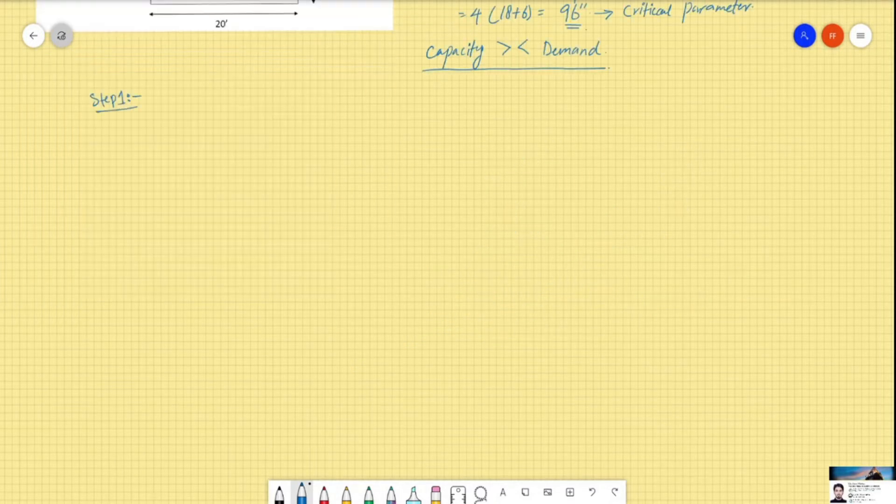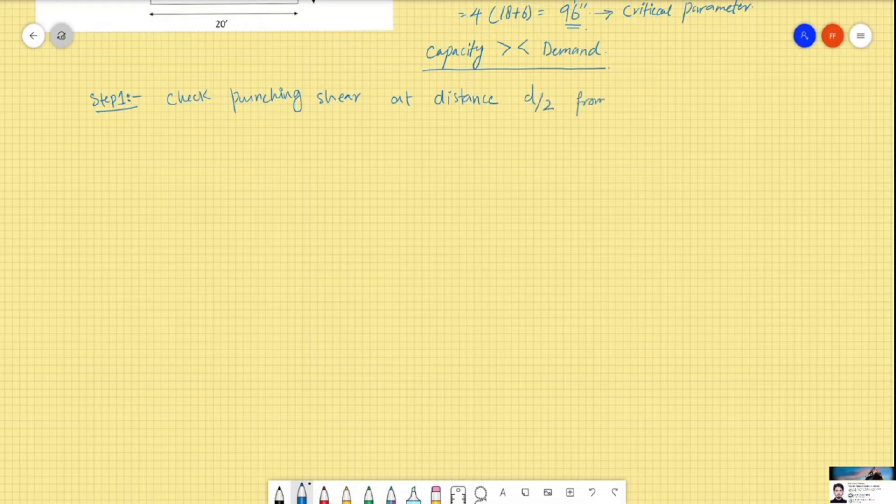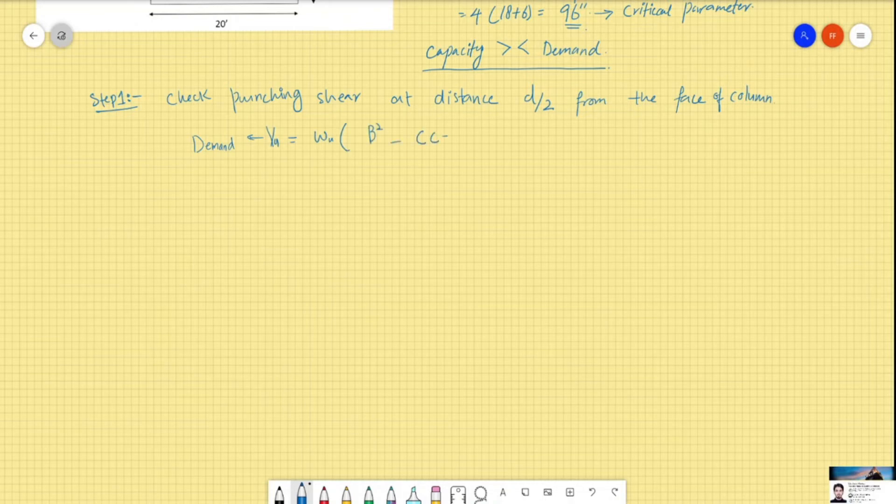Step one: check the punching shear demand at a distance d/2. To calculate demand, we have to find Vu or maximum shear applied. That is load multiplied by the panel width minus the critical section.